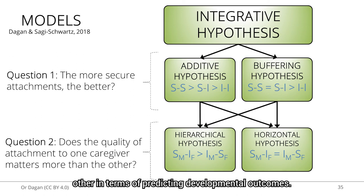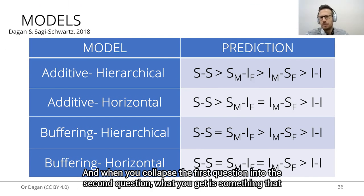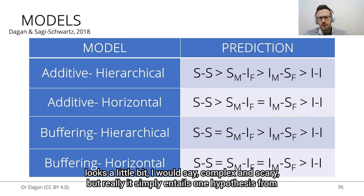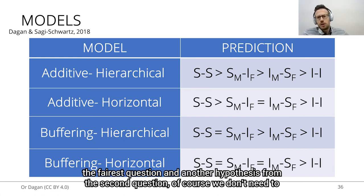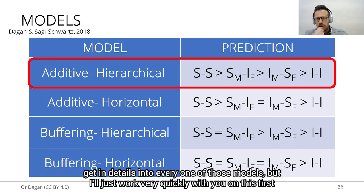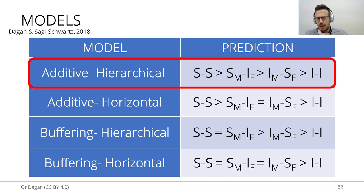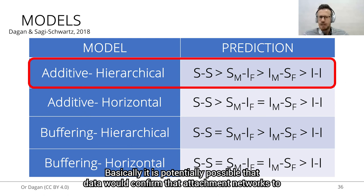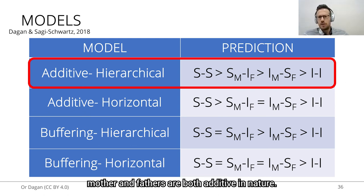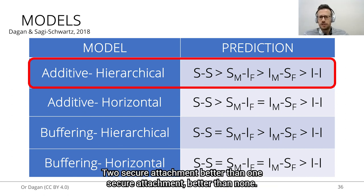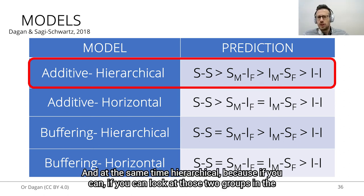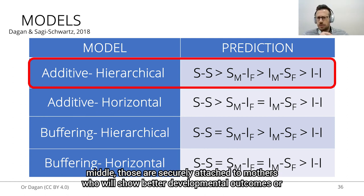When you collapse the first question into the second question, what you get is something that looks a little complex, but it really simply entails one hypothesis from the first question and another from the second question. I'll work quickly through the first potential integrative model: additive-hierarchical. It is potentially possible that data would confirm that attachment networks to mothers and fathers are both additive in nature — two secure attachments better than one better than none — and at the same time hierarchical, because those securely attached to mothers will show more optimal developmental outcomes than those securely attached only to fathers.